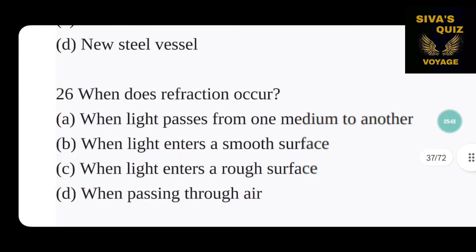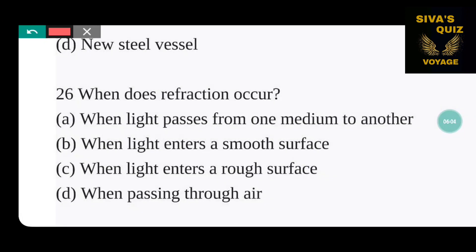When does refraction occur? Options are: when light passes from one medium to another, when light enters a smooth surface, when light enters a rough surface, and when passing through air. Refraction occurs when light passes from one medium to another, because the speed of light changes, causing it to bend. That is why refraction is the correct answer.